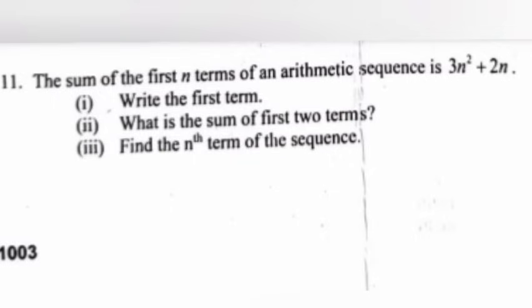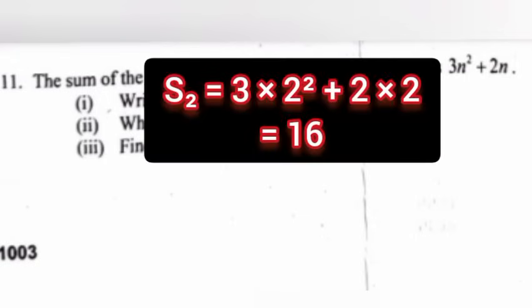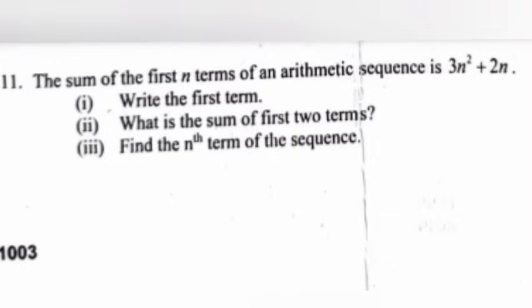Problem 11: The sum of first n terms of an arithmetic sequence is 3n² + 2n. Part 1: Write the first term. Answer: 5. Part 2: What is the sum of first two terms? Answer: S₂ = 3 × 2² + 2 × 2 = 16.